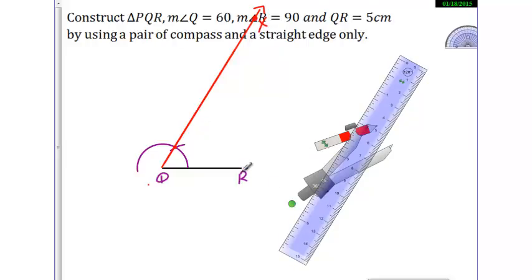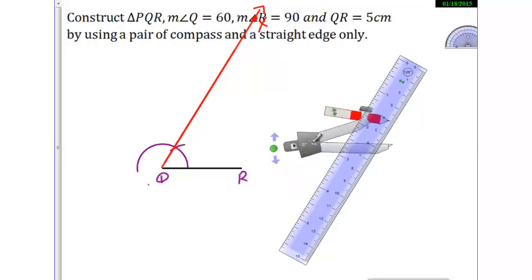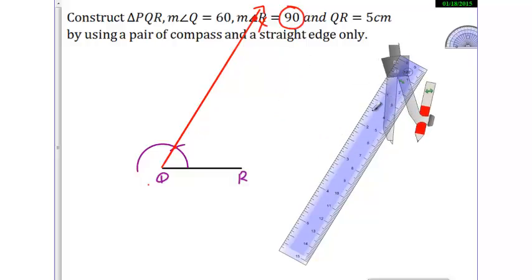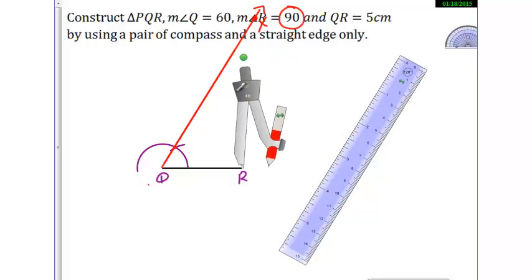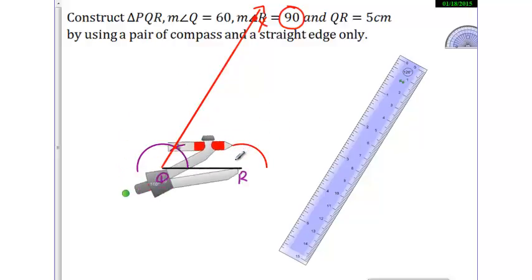Now let me prepare the 90 angle on R. 90 angle because we have been told to prepare the 90 angle at R. So I will put the rounder here. Now you also know how to prepare 90. If you don't know, look at my second video. Alright.